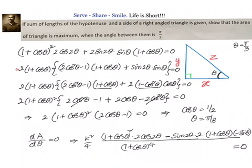Since we know that θ is an acute angle in a right triangle, θ = π is not valid. Therefore, θ must equal π/3.